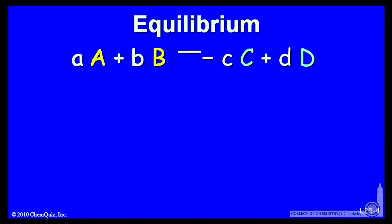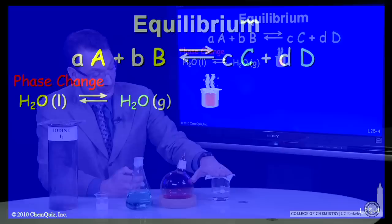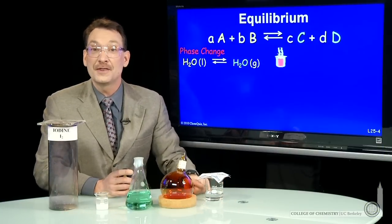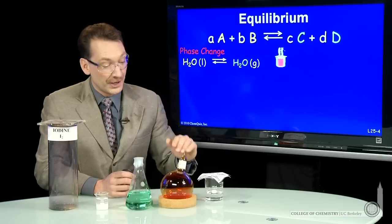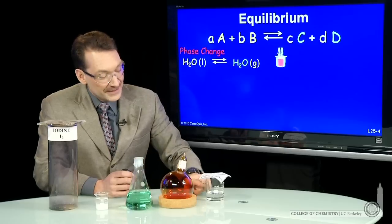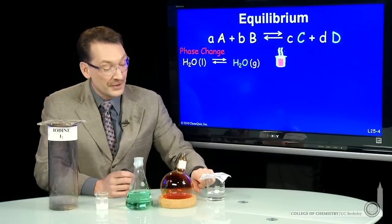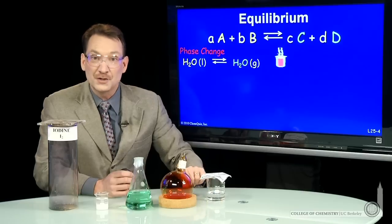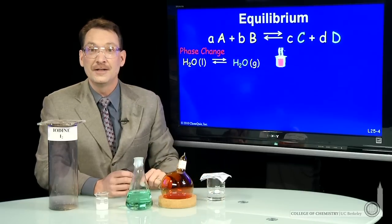You can have equilibrium in a lot of different conditions. For instance, a phase change equilibrium. Here's a physical process: water, liquid water, in equilibrium with water gas. This doesn't have to be at the boiling point of water. There's always an equilibrium between liquid water and gaseous water. In this case, the equilibrium vapor pressure of water is just three hundredths of an atmosphere. So there's three hundredths of an atmosphere of water at 25 degrees C, the equilibrium vapor pressure over the gas.